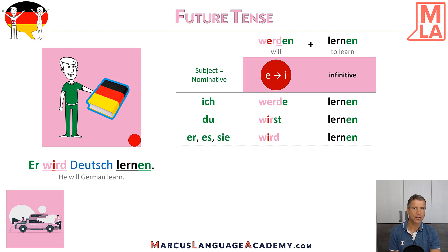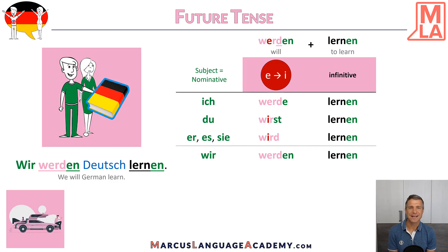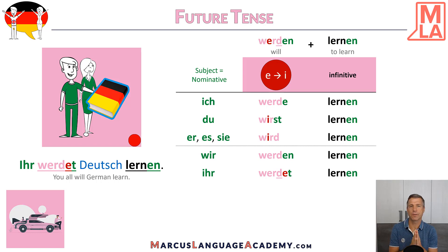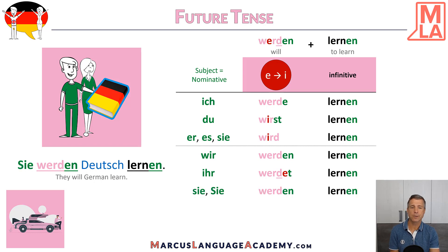And the plural? 'Wir werden lernen.' No surprises here — we add EN like always. 'Wir werden Deutsch lernen' — we will learn German. For 'Ihr', it's a little bit tricky: 'Ihr werdet lernen', because we add an E here. The D at the end of the root doesn't allow us to put the T directly, so we separate the D from the T with an E. 'Ihr werdet Deutsch lernen.' And in third person plural, 'Sie werden lernen' — they will learn German. 'Sie werden Deutsch lernen.' It's still regular, like the first person plural.